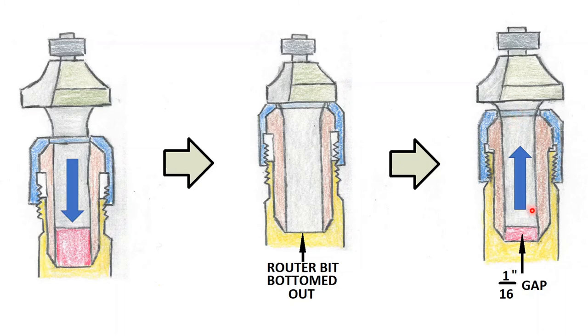The reason why we want to leave that gap is that that gap allows the collet and the bit to be pulled down as the nut is tightened. This allows the collet to tighten properly. Now that we know how to tighten our router bit and we know how much of the silver should be exposed and why, let's continue on with the video.